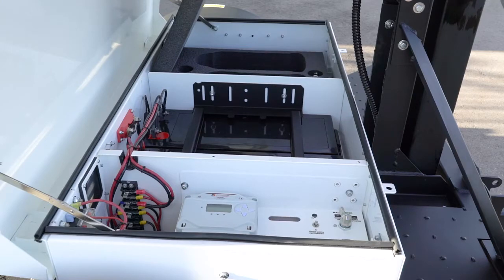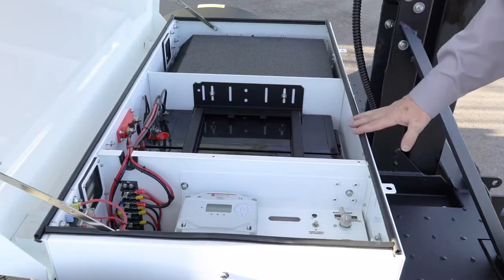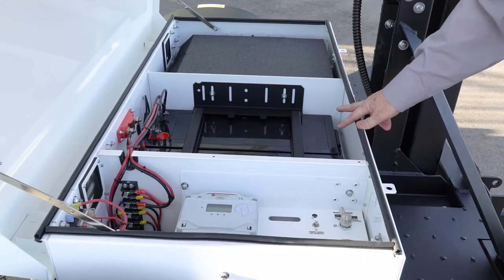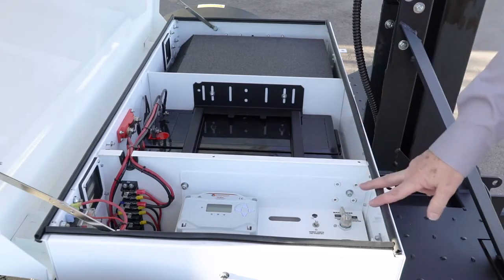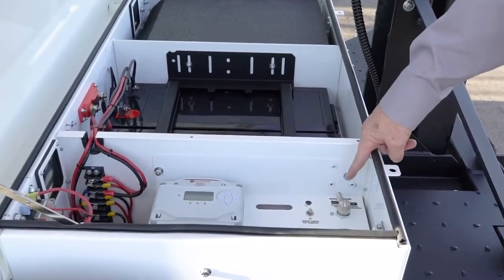Over here we have the batteries - two AGM batteries for 400 amp hours of maintenance-free battery. And over here we have the electronics. Electronics consists of the main power switch for batteries and solar.